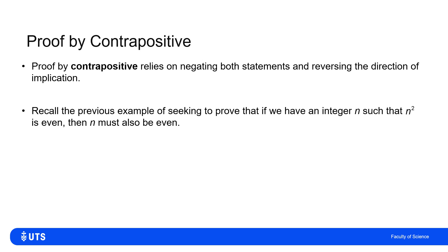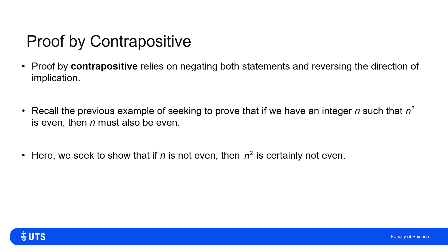Returning to the example from the section on direct proof: we wanted to show that if n is an integer such that n squared is even, then n itself must also be even. When we tried to do that directly, we couldn't justify that n must be even. But if we negate both statements and reverse the implication, we want to show: if n is not even then n squared is not even — because 'n odd implies n squared odd' is the contrapositive of 'n squared even implies n even'.